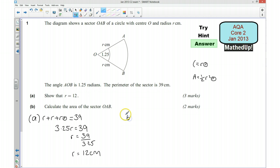Now for part b, we're asked to calculate the area of the sector OAB. So for this we're going to use our formula: A is equal to a half r squared theta. Which means that we're going to get a half of 12 squared, so that's going to be 144, and we're going to times that by theta which is 1.25 radians.